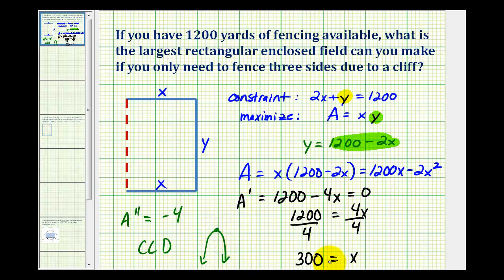So when x is equal to 300, the area is maximized. Now let's go ahead and determine the dimensions of this rectangle as well as the maximum area. Our constraint was 2x plus y must equal 1,200 and we just determined that x is equal to 300, so now we can determine y by performing substitution.